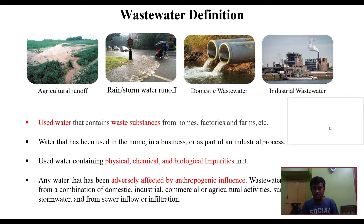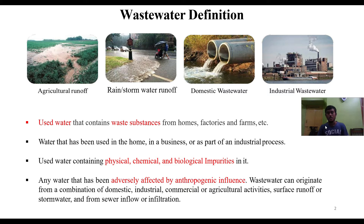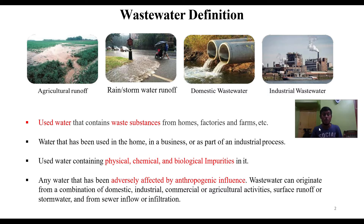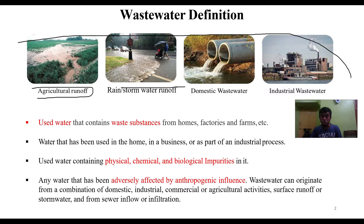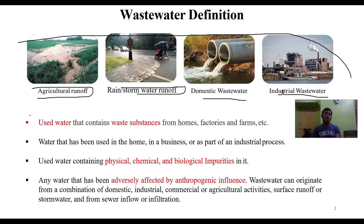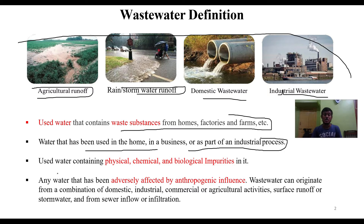Talking about the definition of wastewater — it's a simple term you're all familiar with. There are four different types visible in the images: agricultural runoff, rainstorm water runoff, domestic wastewater, and industrial wastewater. In general, wastewater is water that contains waste substances from homes, factories, farms, and so on — water that has been used in the home, a business, or as part of an industrial process.